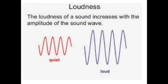Let us discuss the properties of sound one by one. First one is loudness. The loudness or intensity of a sound depends on the amplitude of the vibration producing the sound. The loudness of the sound increases with the amplitude of the sound waves. The amplitude of vibrations of a body is the maximum displacement of the body from its mean position or position of rest. The greater the amplitude, the louder is the sound.